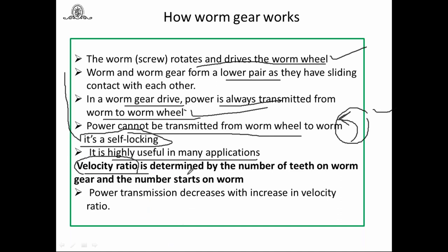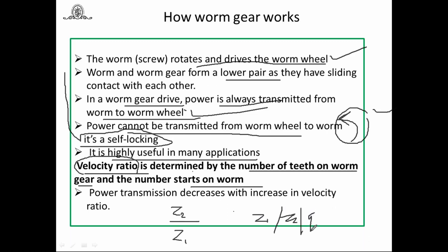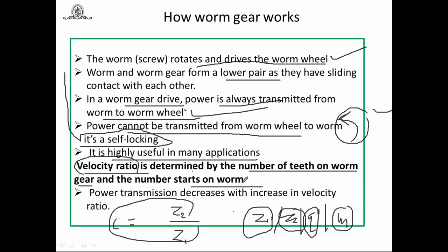The velocity ratio for worm gear is determined as: i = Z2 / Z1, where Z2 is the number of teeth on the worm wheel and Z1 is the number of starts on the worm. The nomenclature uses Z1 (number of starts), Z2 (number of teeth on worm wheel), Q (diametral quotient), and m (module).